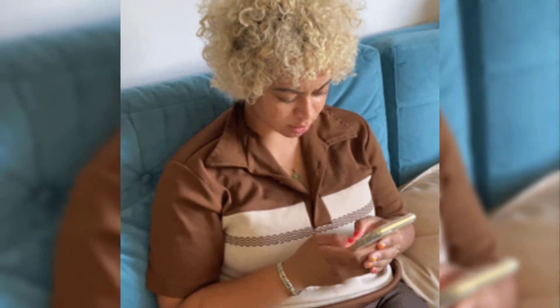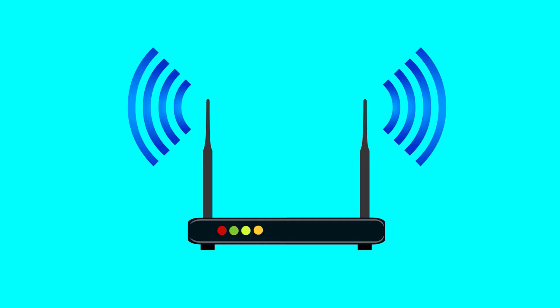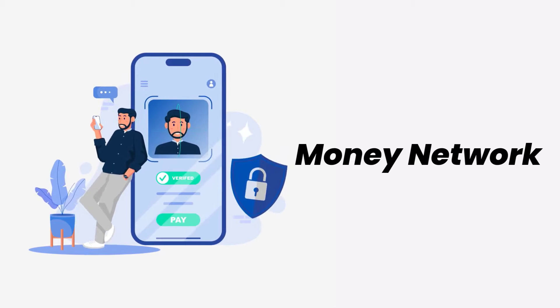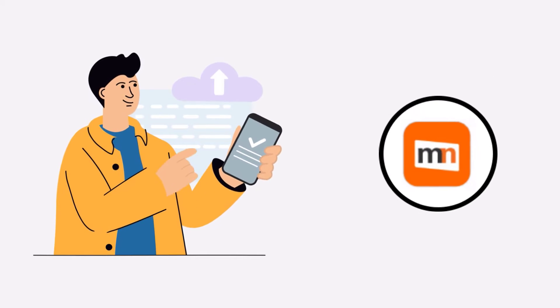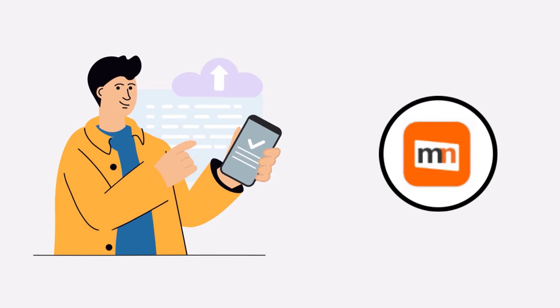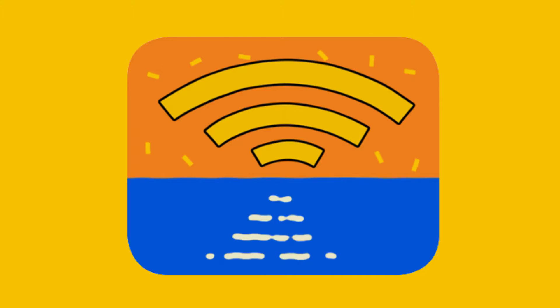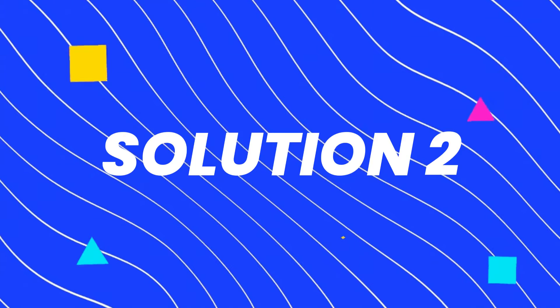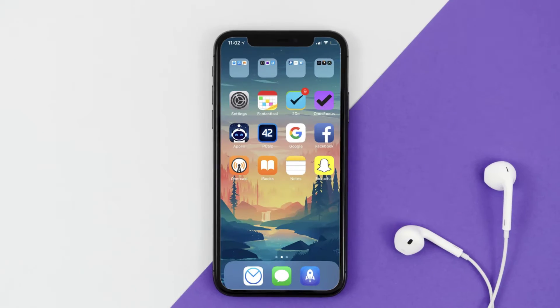It might be possible that you're not able to log into the Money Network app due to a connectivity issue. First of all, you need to make sure you have a strong and stable internet connection. Do a quick test by opening an app that runs on the internet other than the Money Network app and check if it's working. You can also try switching from Wi-Fi to mobile data and vice versa — doing this might help you log into your Money Network mobile app.